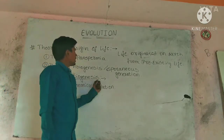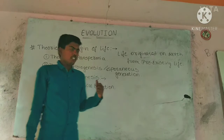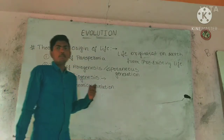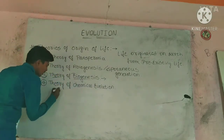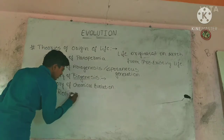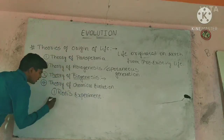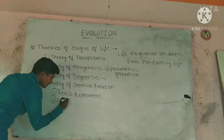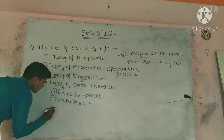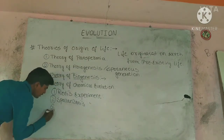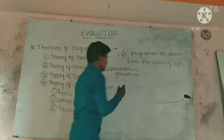The Theory of Biogenesis disproved abiogenesis, though it could not fully explain the origin of life on its own. This theory was supported by conducting several experiments, including Redi's experiment and Spallanzani's experiment.